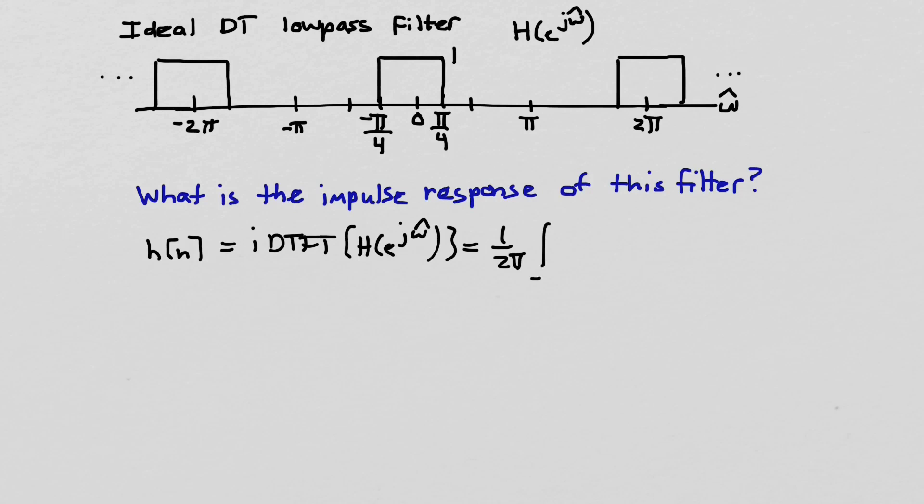We use ω̂ for the frequency variable for discrete-time. So we just write the definition of the inverse DTFT. It's 1 over 2π, the integral from -π to +π of h(e^(jω̂)), times e^(+jω̂n), and then we integrate with respect to the frequency variable ω̂. This is the main definition of the inverse DTFT.